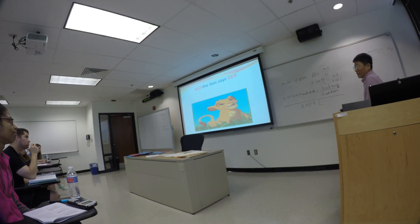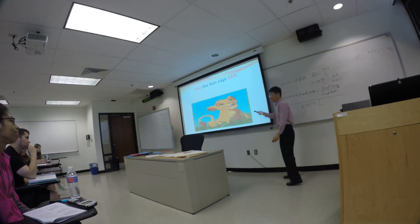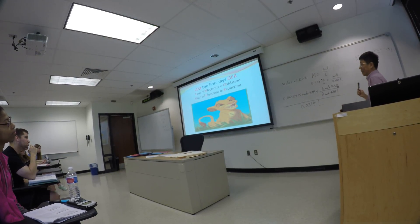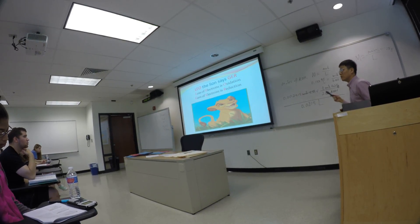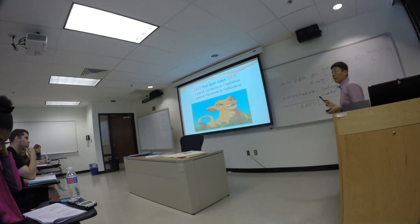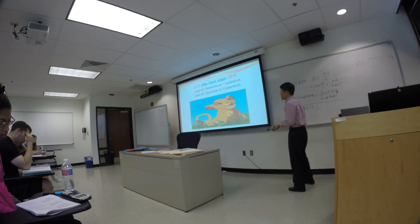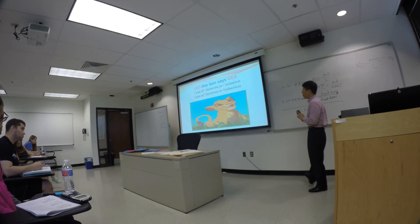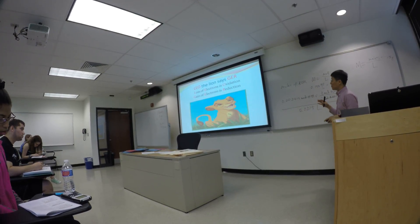Another mnemonic is LEO the lion: loss of electrons is oxidation — that's LEO. GER: gain of electrons is reduction. So that tells you the direction of the electron — where does the electron go? What happens in a redox reaction in terms of electron transfer? Hopefully these two pictures will help you identify what happens every time you think about redox reactions.